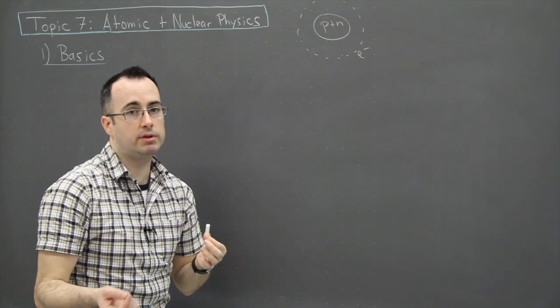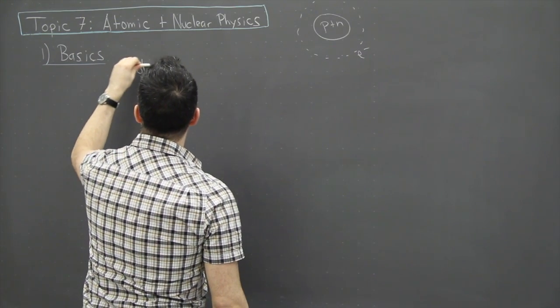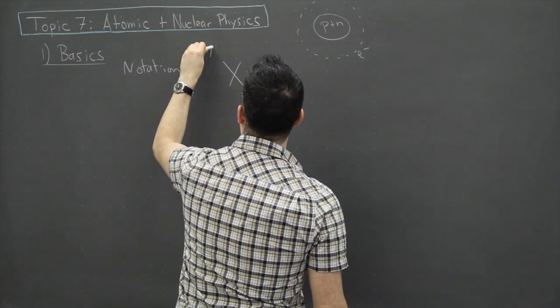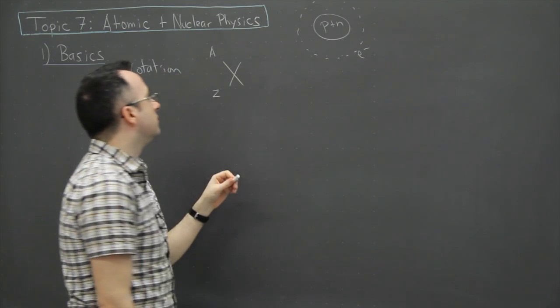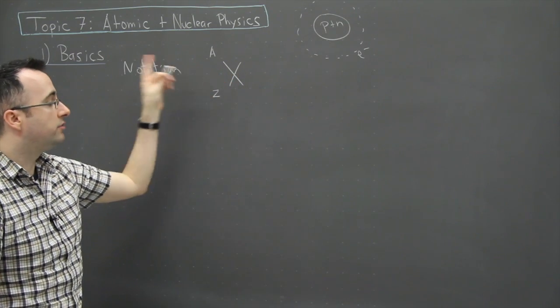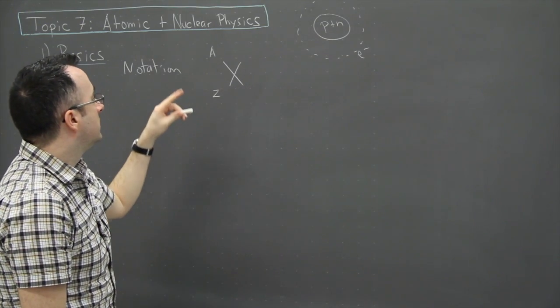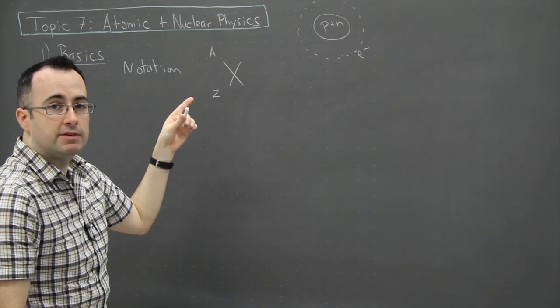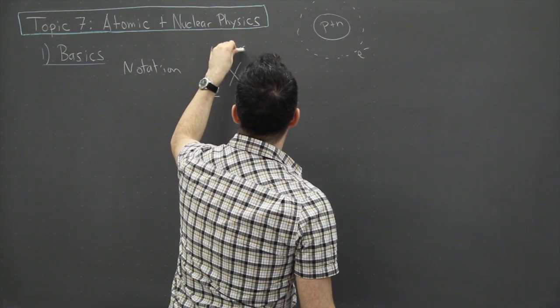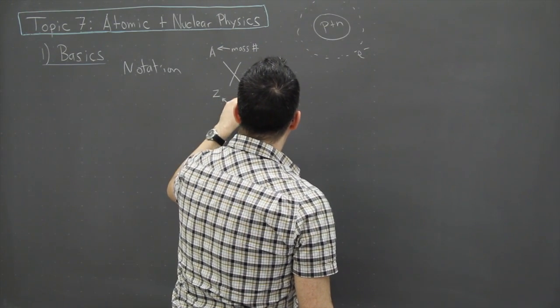Now if we look at these, we can look at some basics here in order to try to understand a little bit about what's going on. One of the things is the notation that we use. So the notation that we use normally goes like this: I'll just write a generic thing. So X with a little A here and with a Z value here. This is just the element, the symbol for the element. It could be whatever—it could be hydrogen or helium or gold or silver, whatever you feel like. Now let's just talk about what each of these different letters means here. So A right here, this is the mass number, and Z is the atomic number.